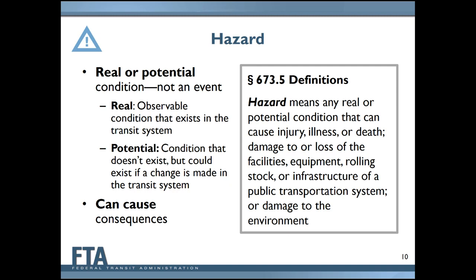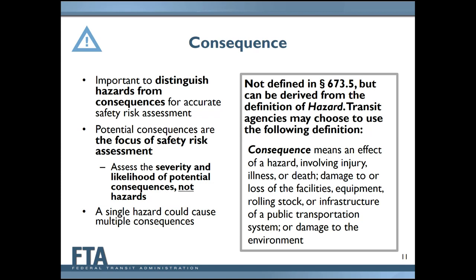That brings us to the term consequence. Part 673 requires transit agencies to assess the likelihood and severity of the consequences of hazards. The text does not provide an explicit definition of consequence, so transit agencies may derive a definition using other text in Part 673 — for example, defining a consequence as the effect of a hazard involving injury, illness, or death; damage to or loss of facilities, equipment, rolling stock, or infrastructure; or damage to the environment.